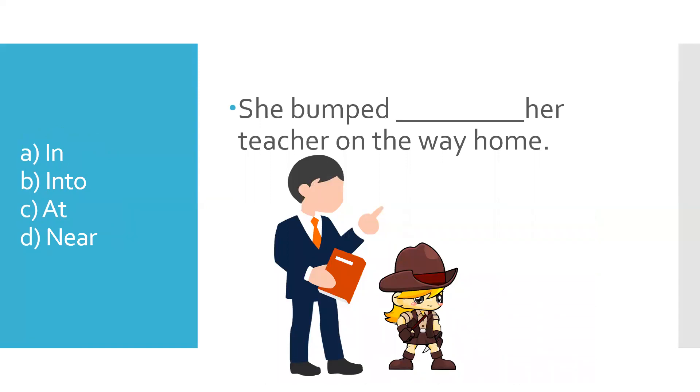She bumped, dash, her teacher on the way home. Can I say in, into, at, or near? What do you think? The answer is into. She bumped into. You always bump into someone. And that does not mean that you are literally bumping, hitting into someone or banging into someone. It just means that she met him. All right. Met him by chance. That's what it means. She bumped into her teacher on the way home.